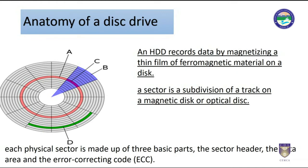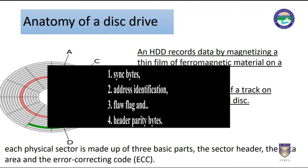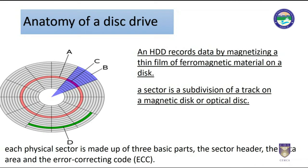The disk sector refers to the intersection of a track and a geometrical sector. Each physical sector is made up of three basic parts: the sector header, the data area, and the error correcting code. The sector header contains information used by the drive and controller, including sync bytes, address identification, flaw flag, and header parity bytes. The header may also include an alternate address to be used if the data area is unreliable. The address identification ensures the read-write head is positioned over the correct location. The data area contains recorded user data, while the ECC field contains codes used to check and possibly correct errors introduced into the data.